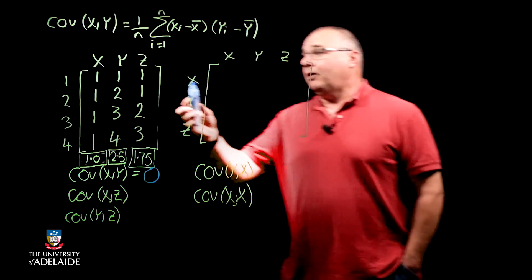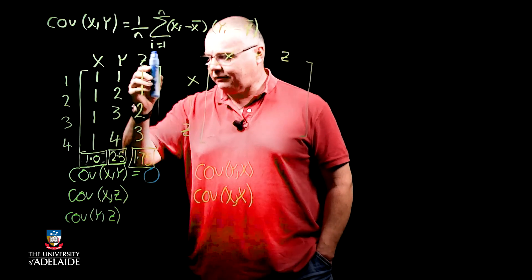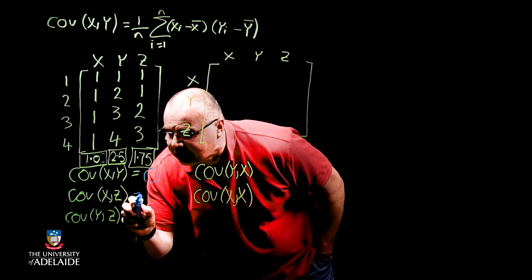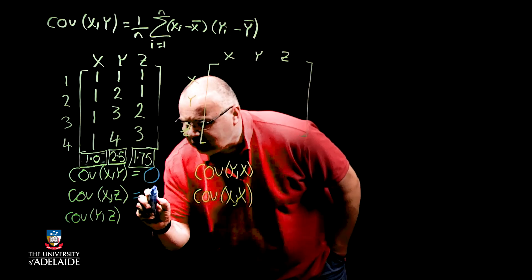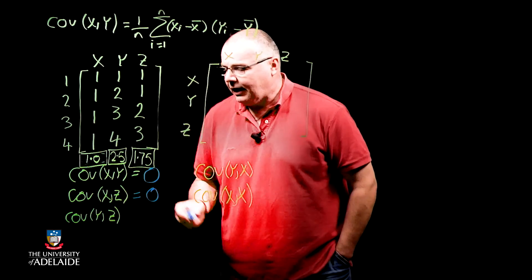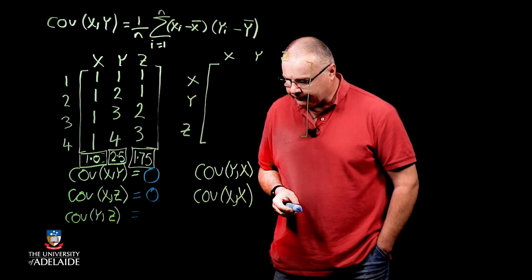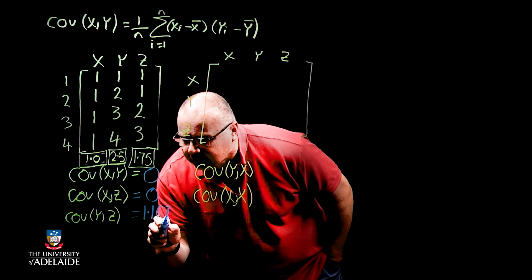But we've got other comparisons we could do. We can do x and z and y and z. So x and z, if we do that, I'll give you a second to do the calculation. Again, you should get zero. And y and z, again, a second for you to do the calculation yourself, you should get 1.167.